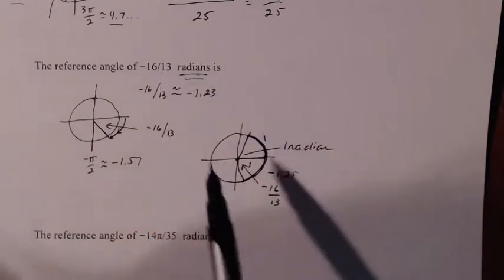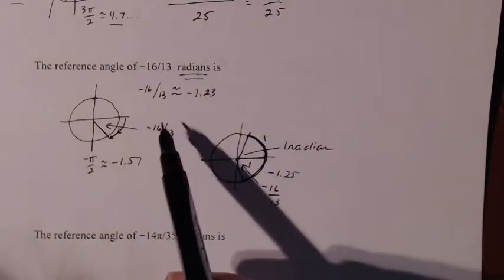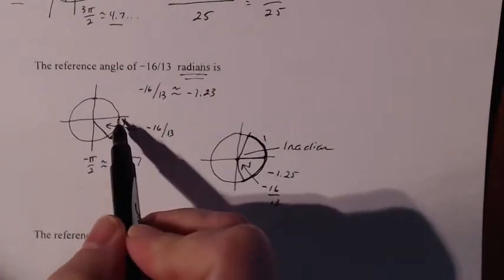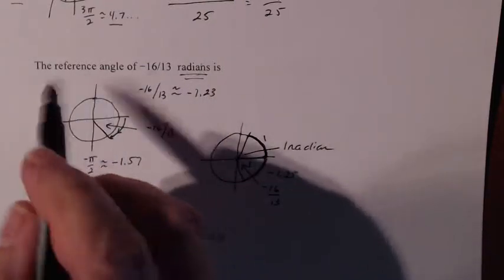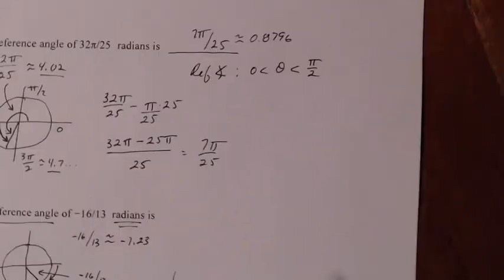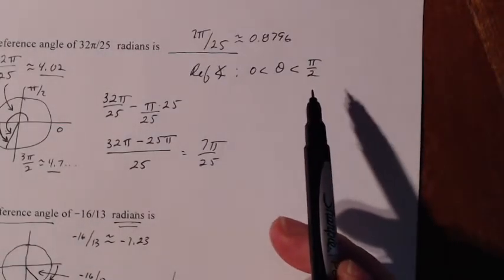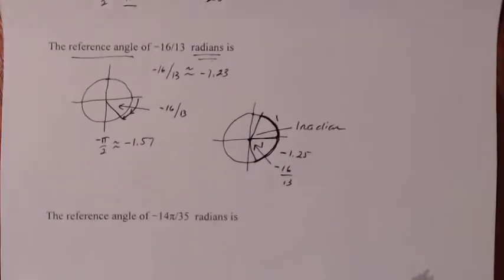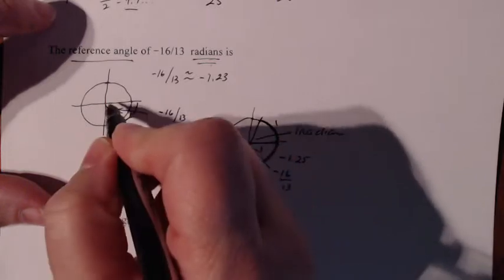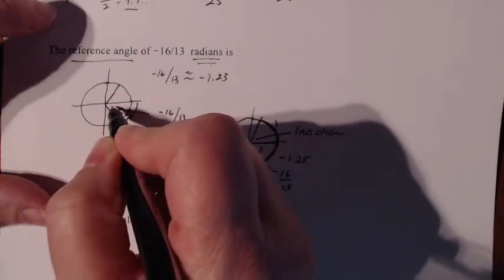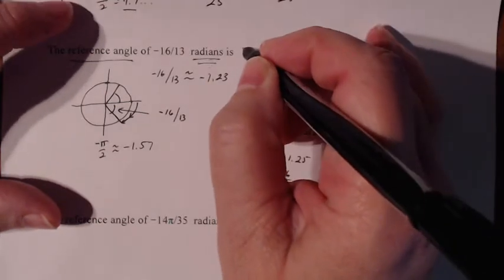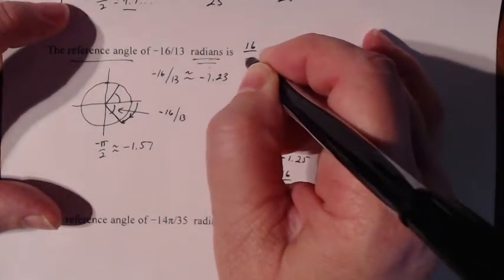This angle is in the fourth quadrant, between negative π over 2 and zero. A reference angle needs to be positive and between zero and π over 2. Since the angle measurement is the same but negative, we just make it positive. So the reference angle is positive 16 over 13.